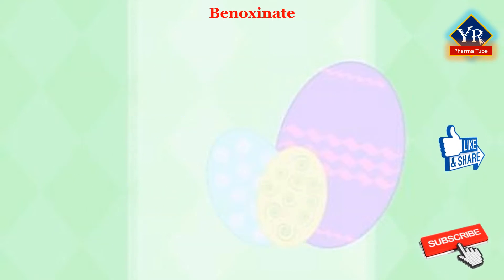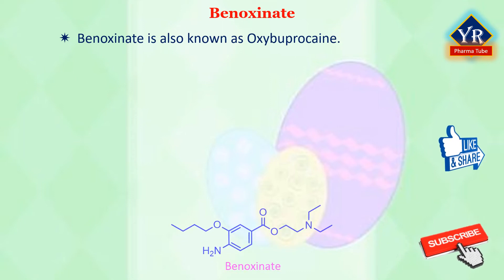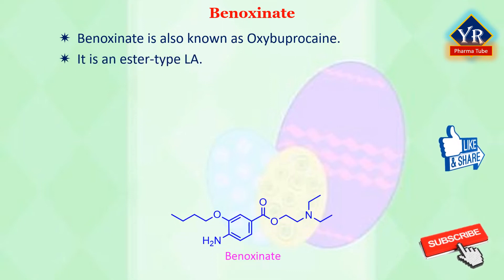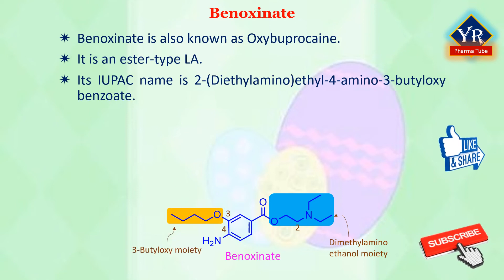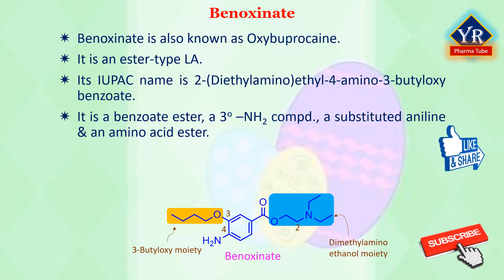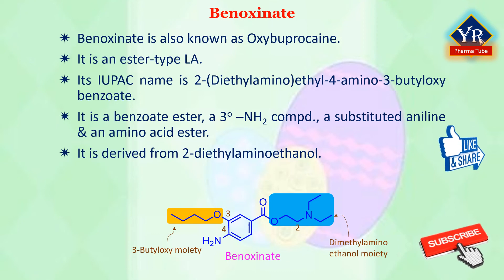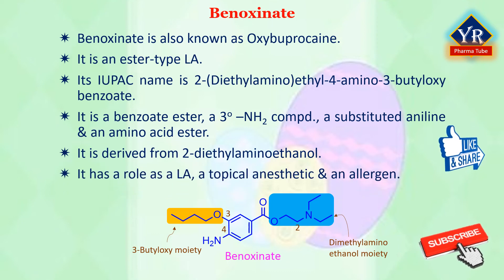The last drug of this lesson is benoxinate, also known as oxybuprocaine. It is an ester type local anesthetic. Its IUPAC name is 2-diethylaminoethyl-4-amino-3-butyloxybenzoate. It is a benzoate ester in which 4-amino-3-butoxybenzoic acid and 2-diethylaminoethanol have combined to form the ester bond. Thus, it is a benzoate ester, a tertiary amino compound, a substituted aniline, and an aminoacyl ester. It can be derived from 2-diethylaminoethanol. It has a role as a local anesthetic, a topical anesthetic, and a drug allergen.